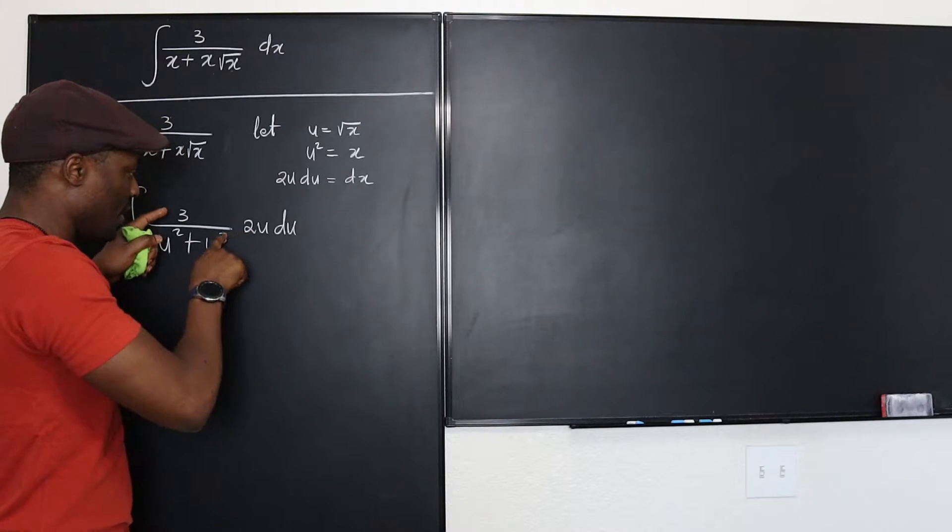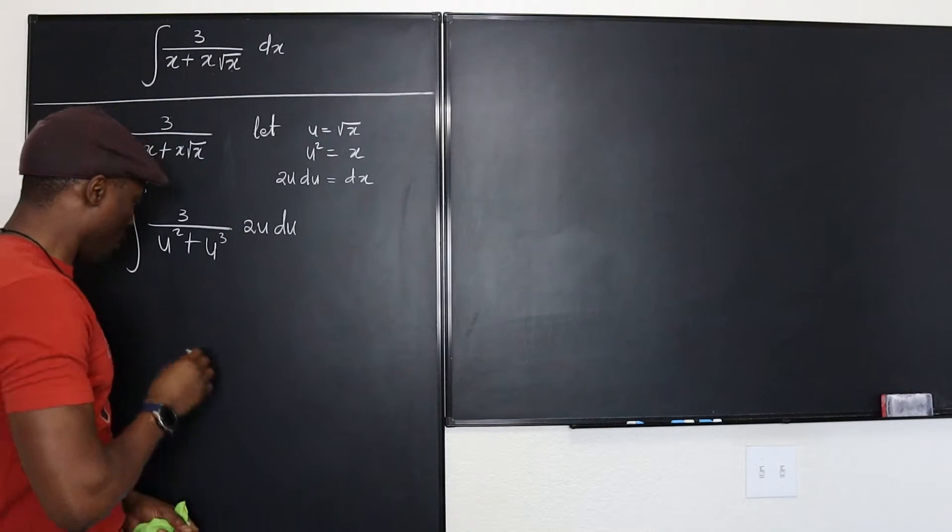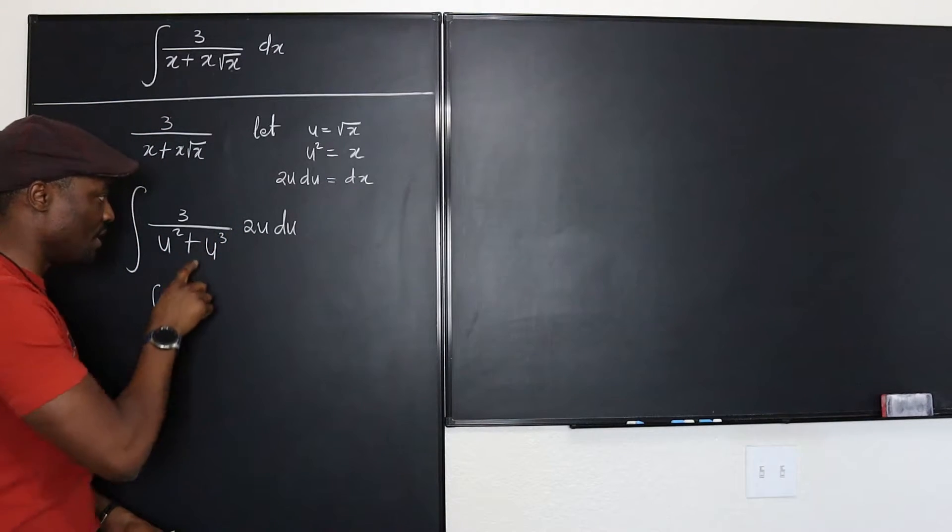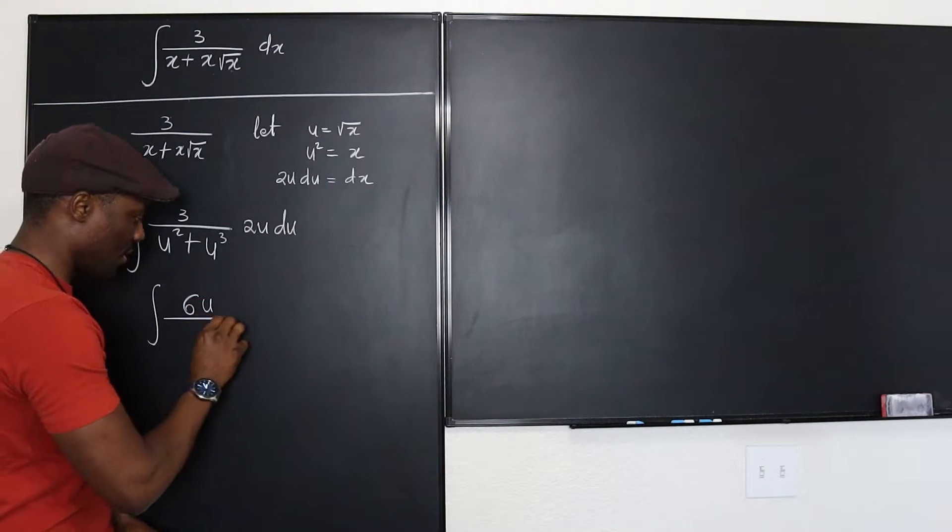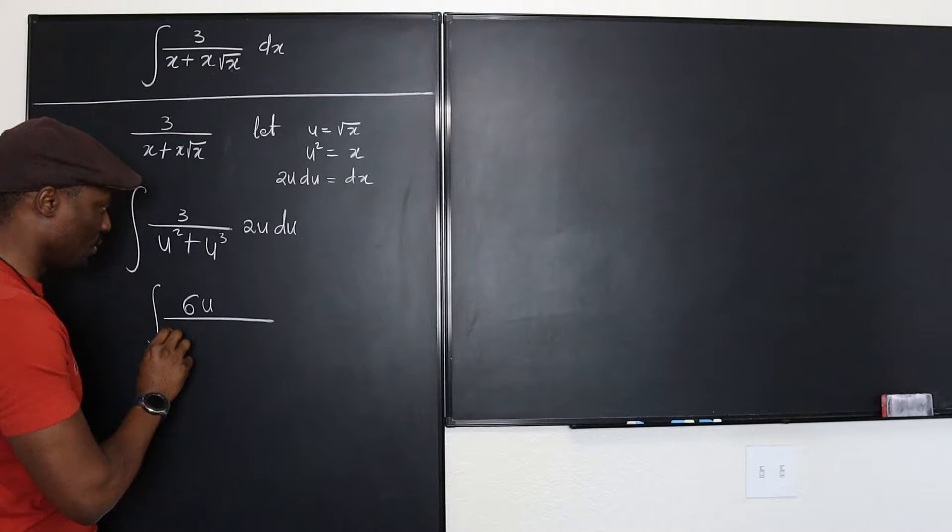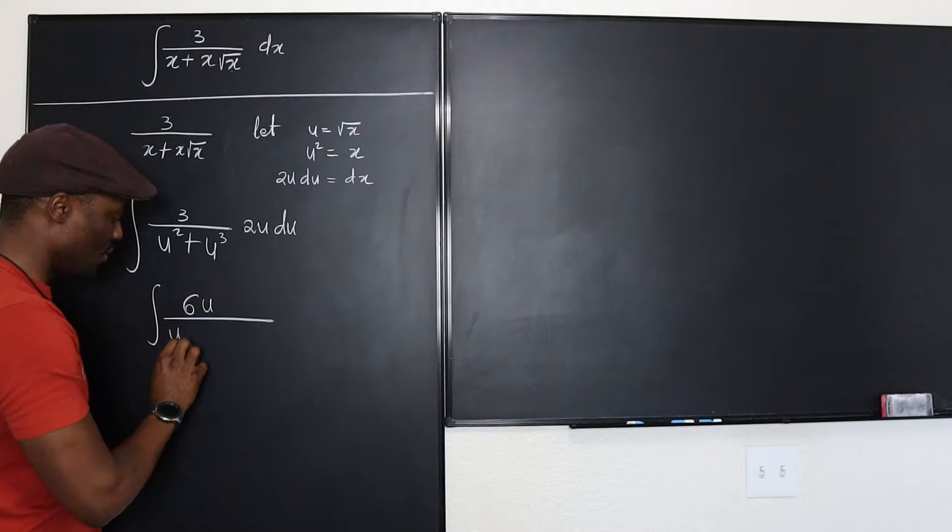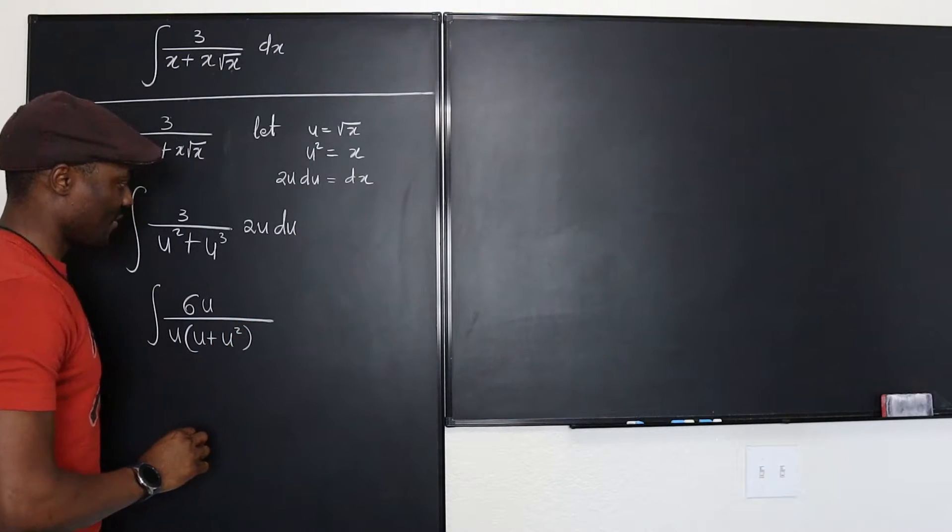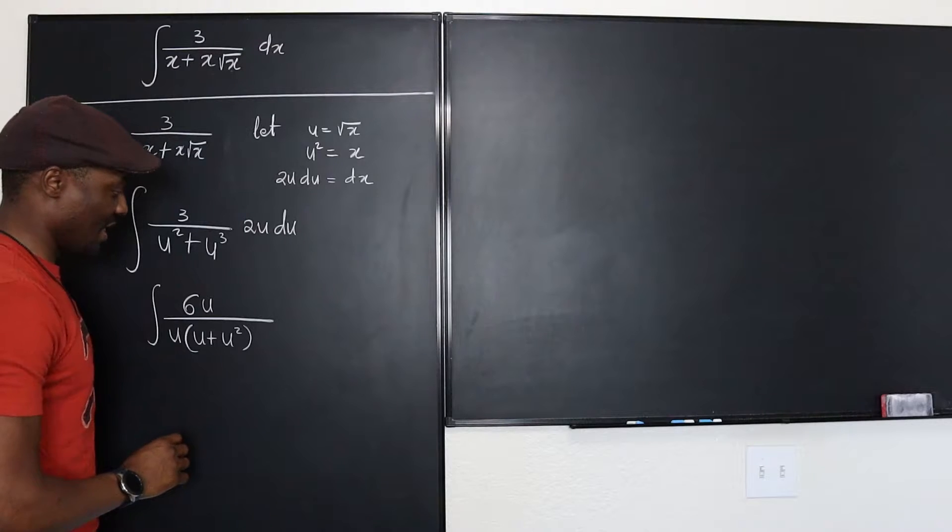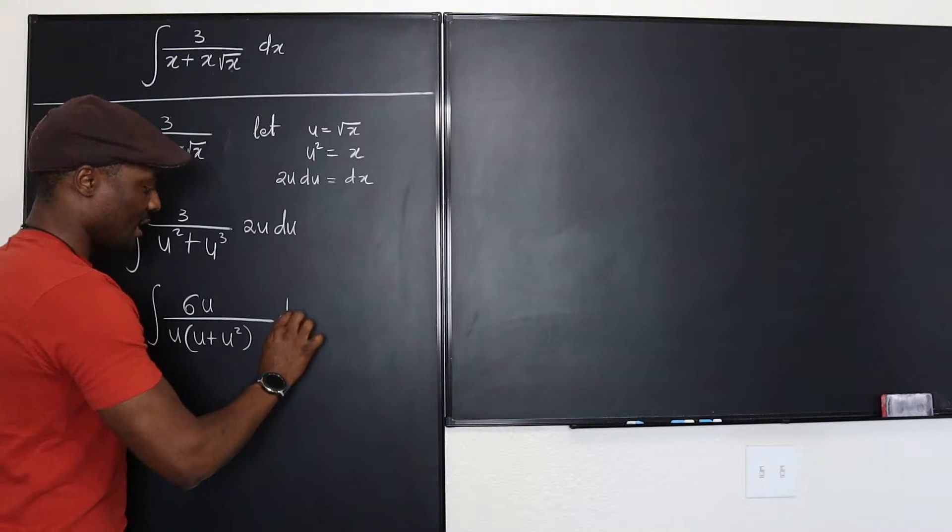Good, good. So what we have right now will be equal to 6u over this is going to be u squared. I'm going to say u into u plus u squared.